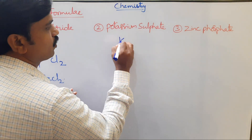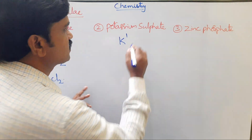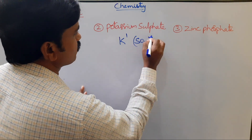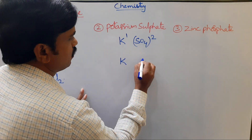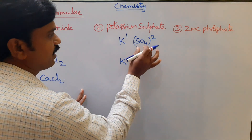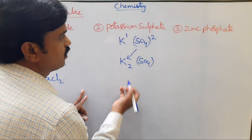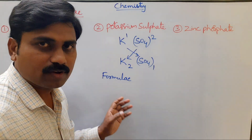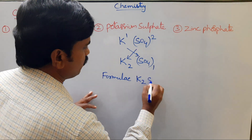Example: potassium sulfide. Potassium has charge 1, and sulfate ion SO₄²⁻ has charge 2. Criss-crossing: the 2 transfers to potassium and potassium's valency of 1 transfers to sulfate. The formula for potassium sulfide is K₂SO₄.